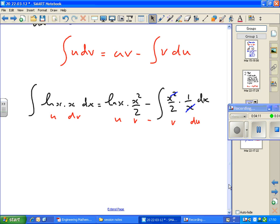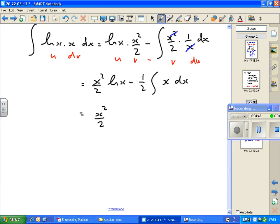So that becomes, writing the x squared over 2 term first, or even writing as a half x squared, log x, minus, I can bring the half outside the integral, so it becomes the integral of x dx. It's not critical to do that, but I always tend to take the constants outside. You could leave it as x over 2 inside and then integrate that. Minus a half. What's the integral of x?